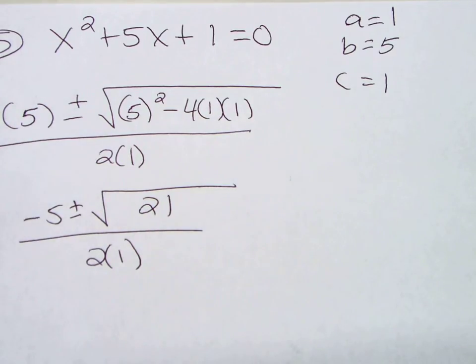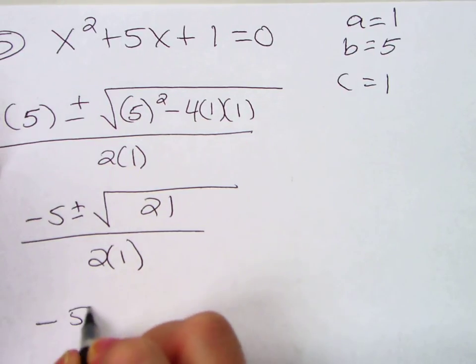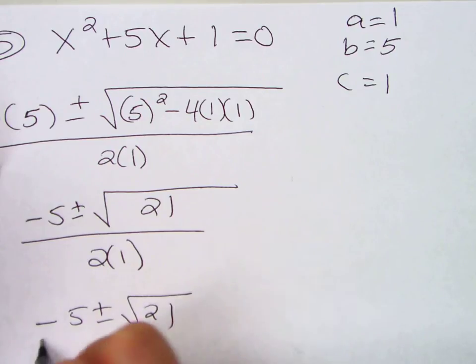You get 21 all over 2 times 1. Now, this one's not so nice because what's the square root of 21? Any ideas? No. Oh, I forgot to multiply the 2 and 1. Negative 5 plus or minus the square root of 21 all over 2.